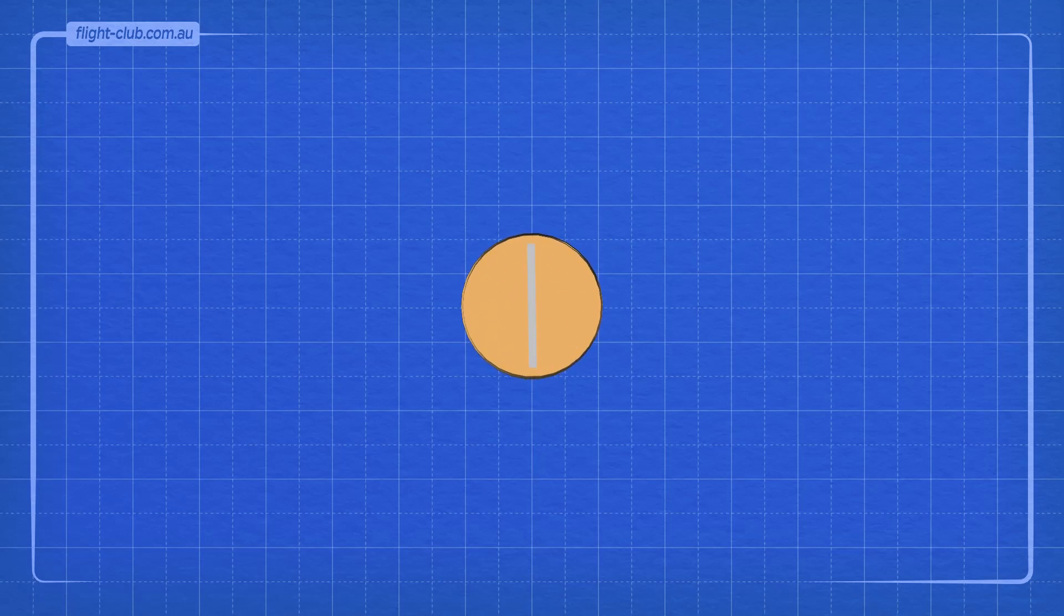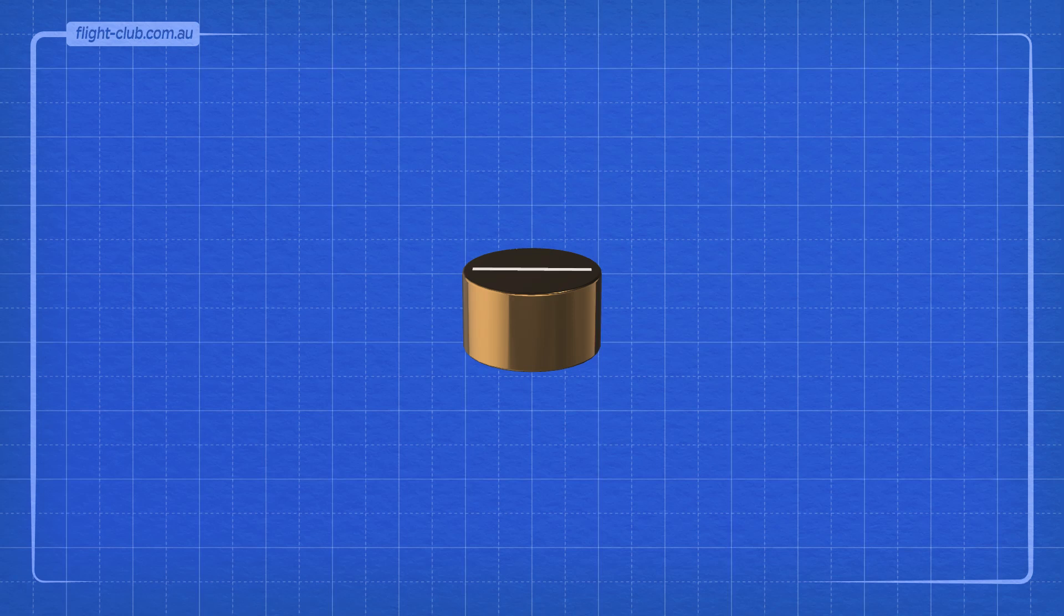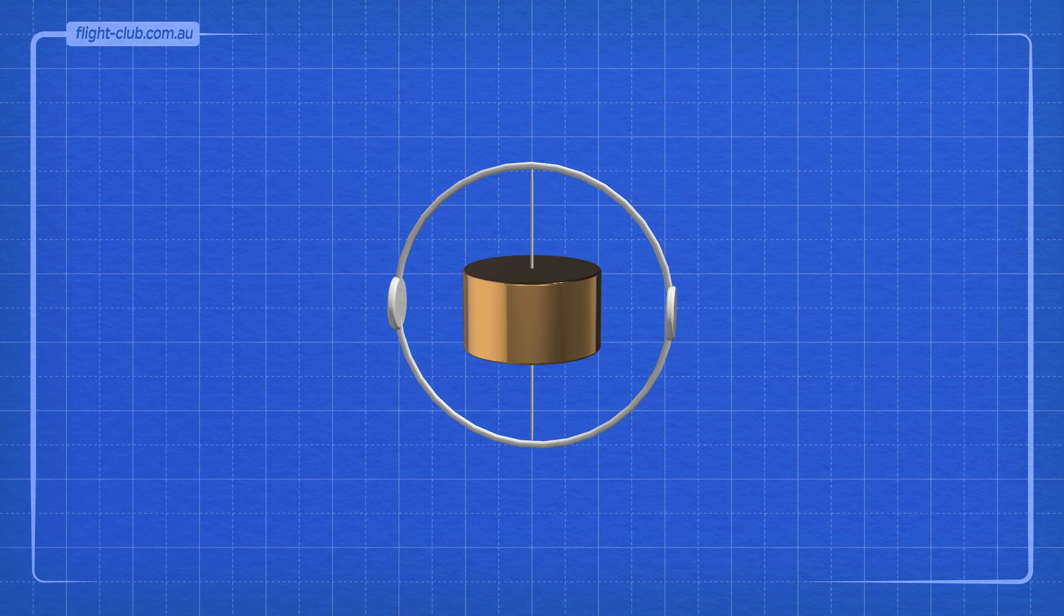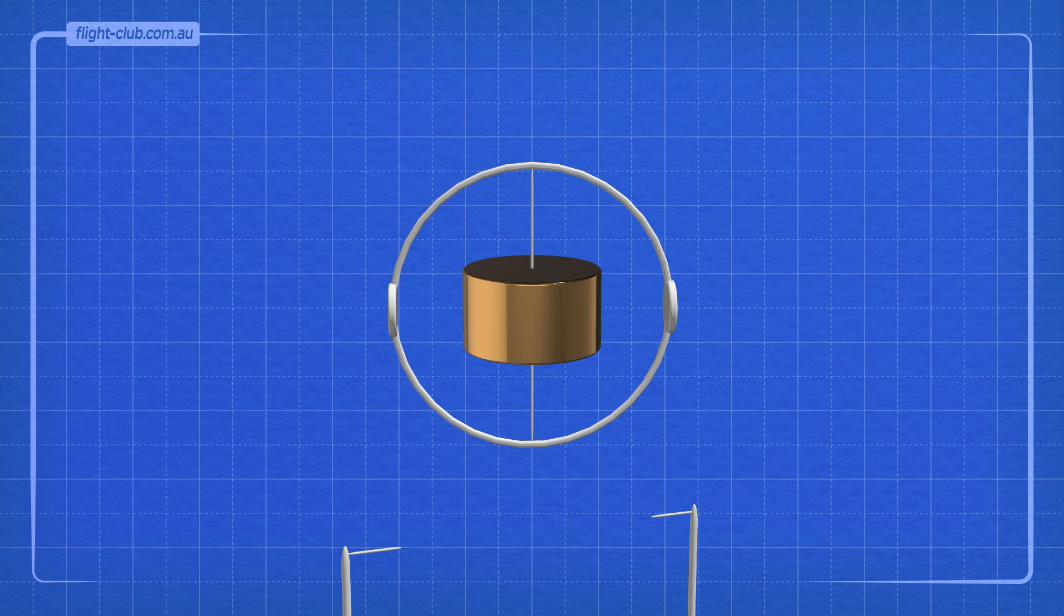A rotating disc like this has some interesting properties that have a very useful application in aviation. When mounted so that the axis is free to move in more than one direction, this disc forms the heart of what's called the gyroscope.